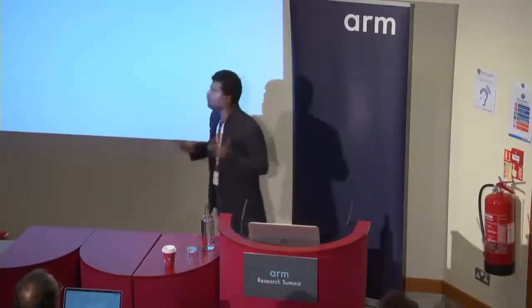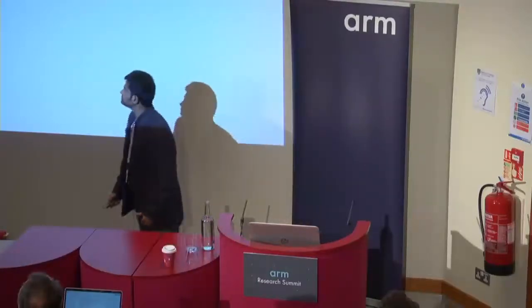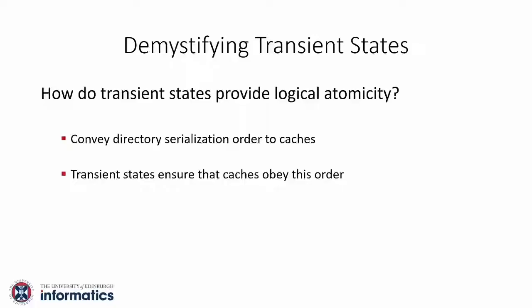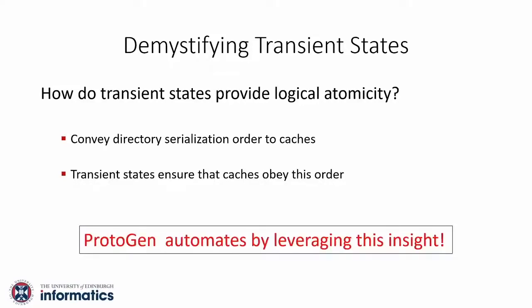With this insight in mind, let us understand how transient states provide logical atomicity. The question is: how do transient states provide logical atomicity? The overarching structure is that the directory knows the serialization order of coherence transactions. If somehow the directory can convey this order to the caches and the caches can honor this order, then we are done. This is what we exploit and automate — this is what Protogen automates.